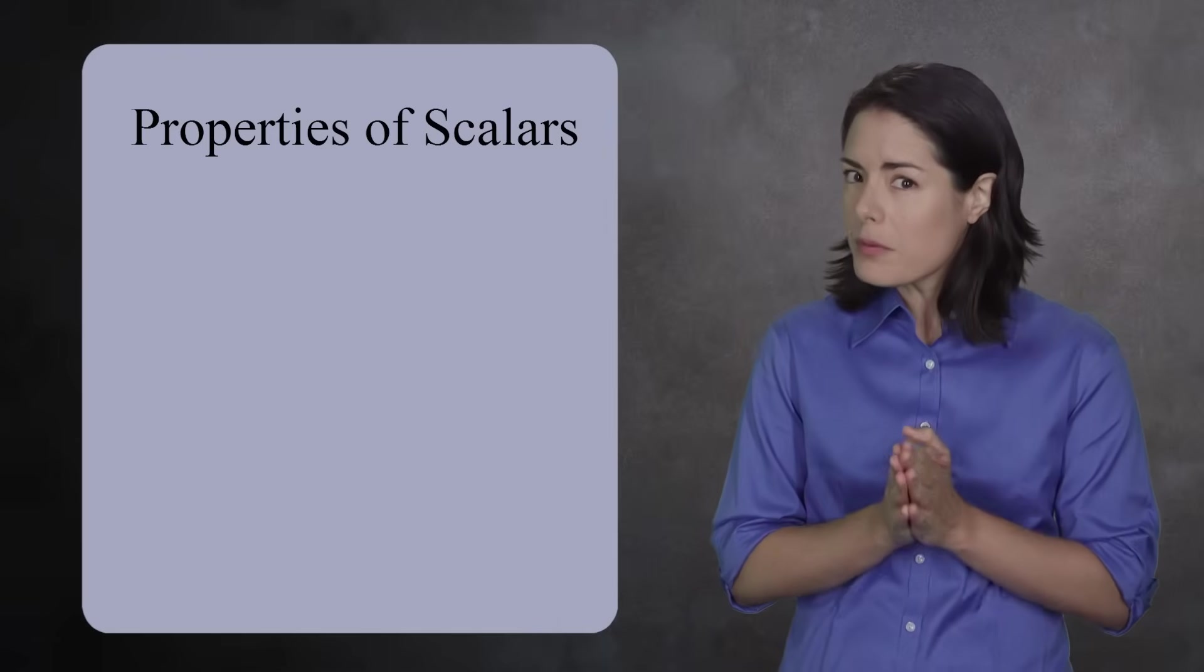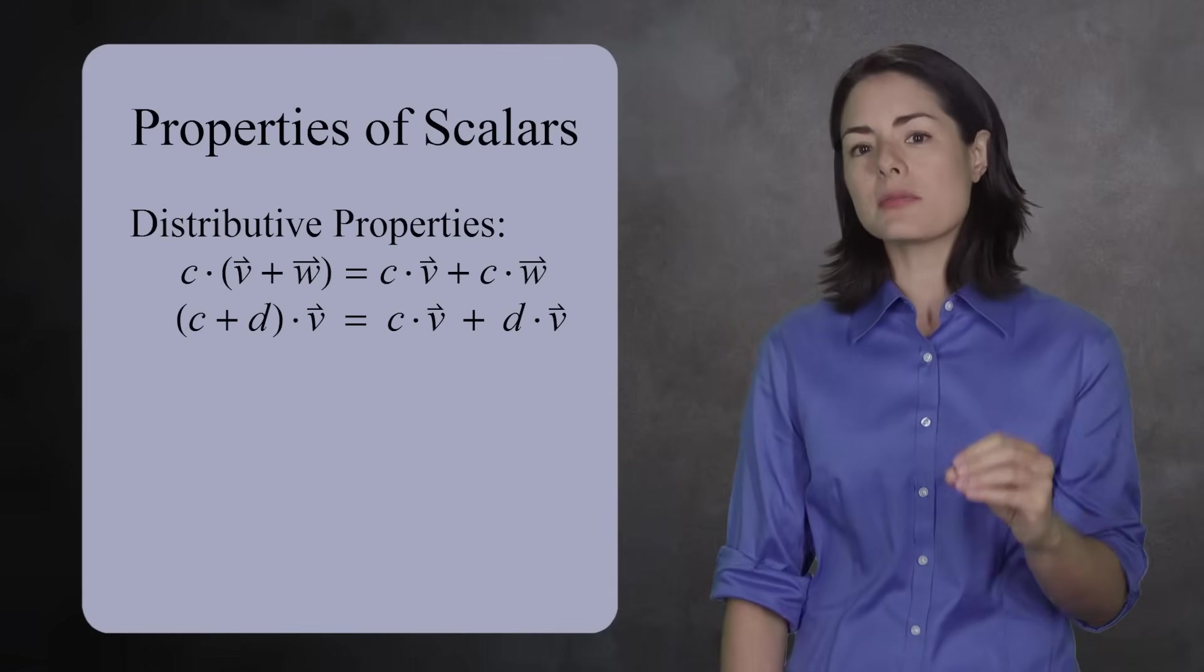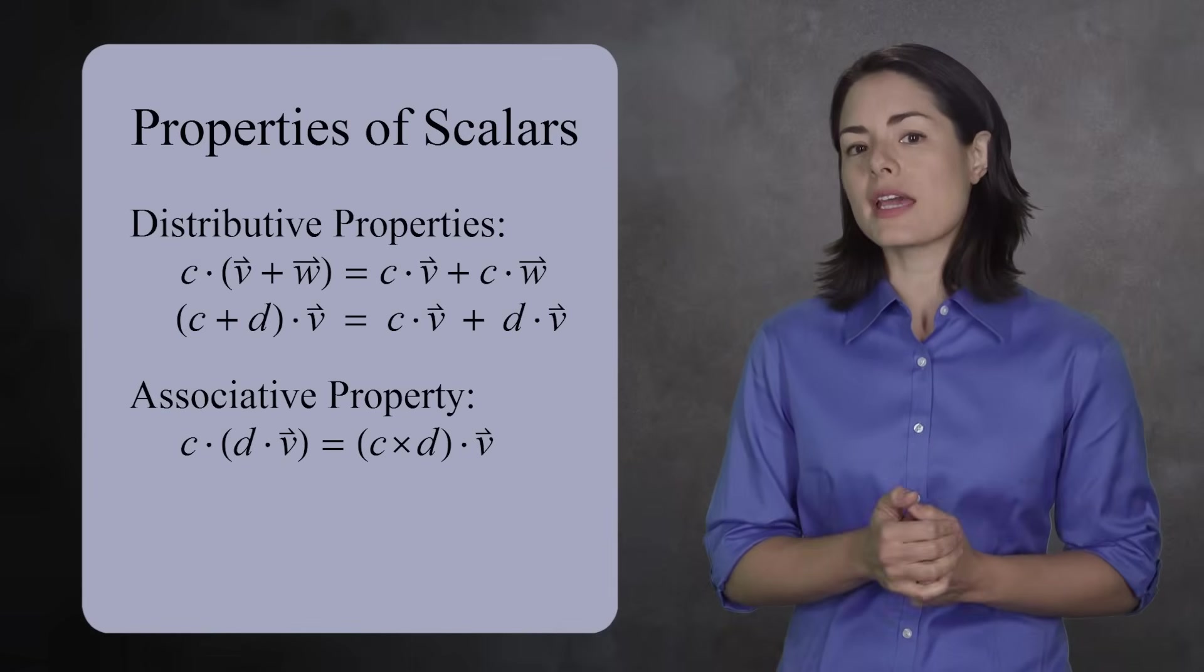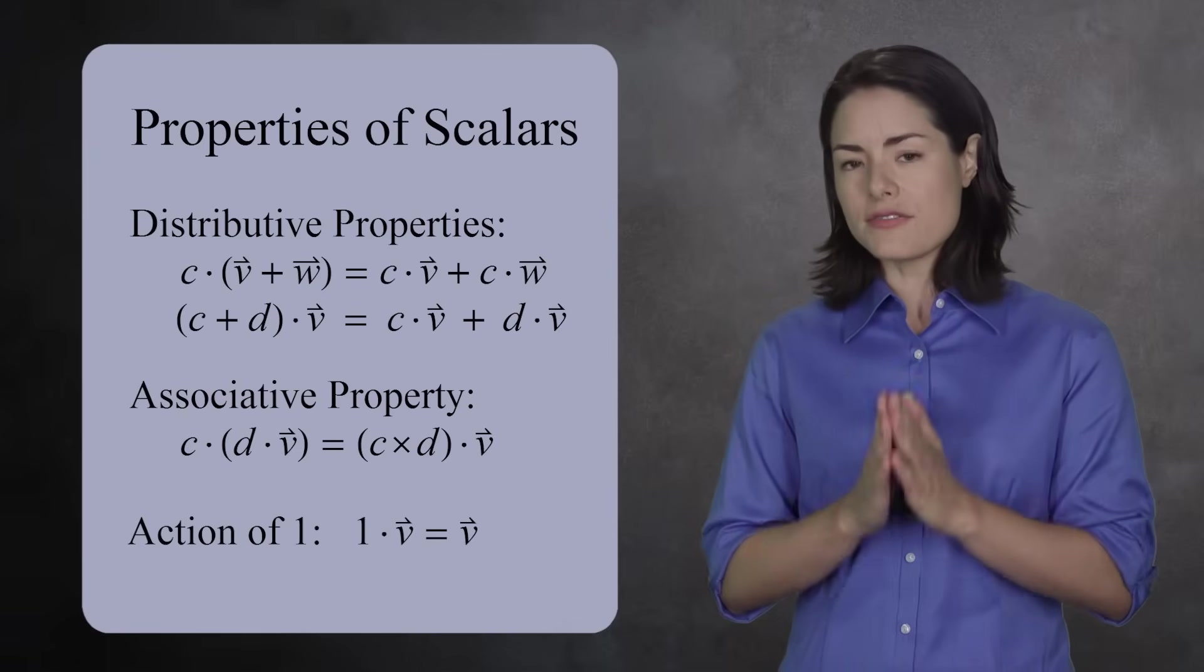And for the record, there are a few properties of scalars which will probably not surprise you, but they need to be said. Multiplying by scalars follows the distributive properties. Scalar multiplication is associative, and multiplying a vector by 1 leaves it unchanged.